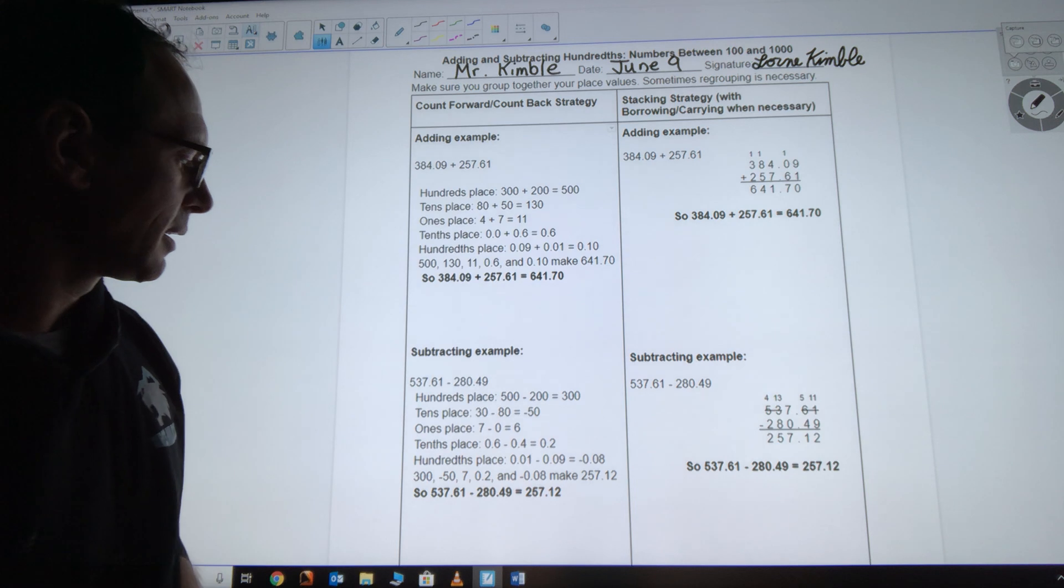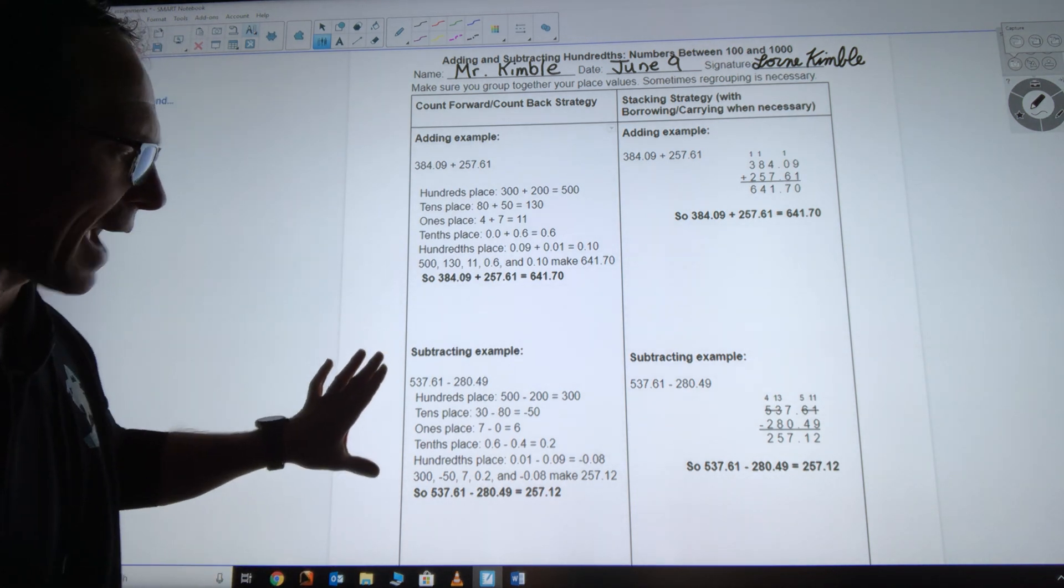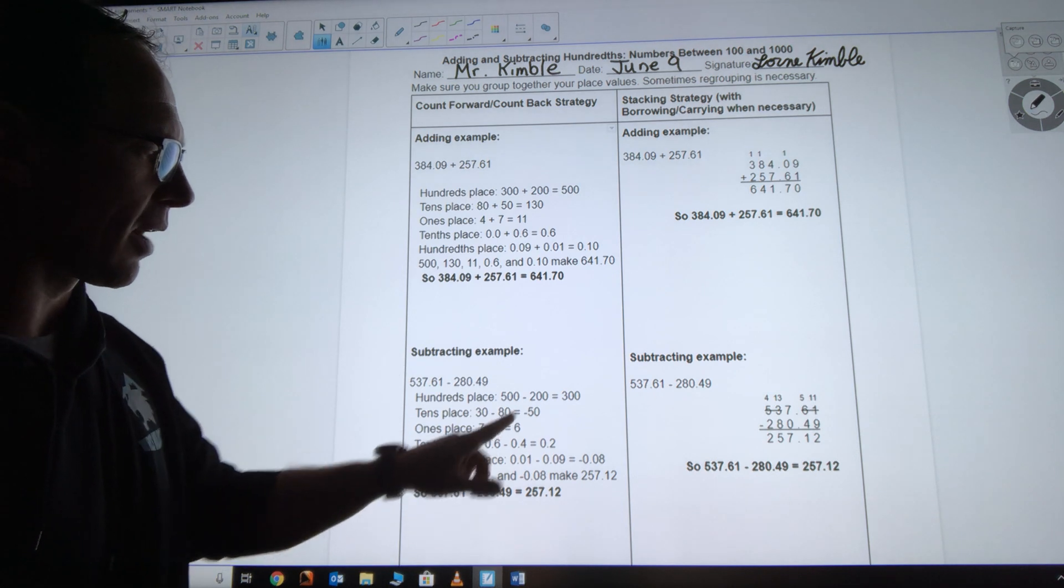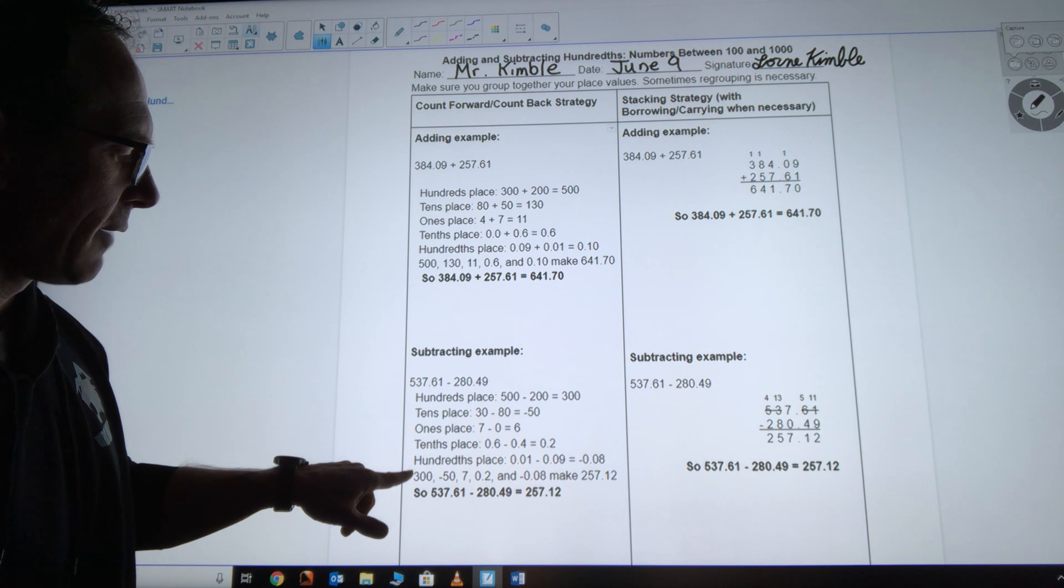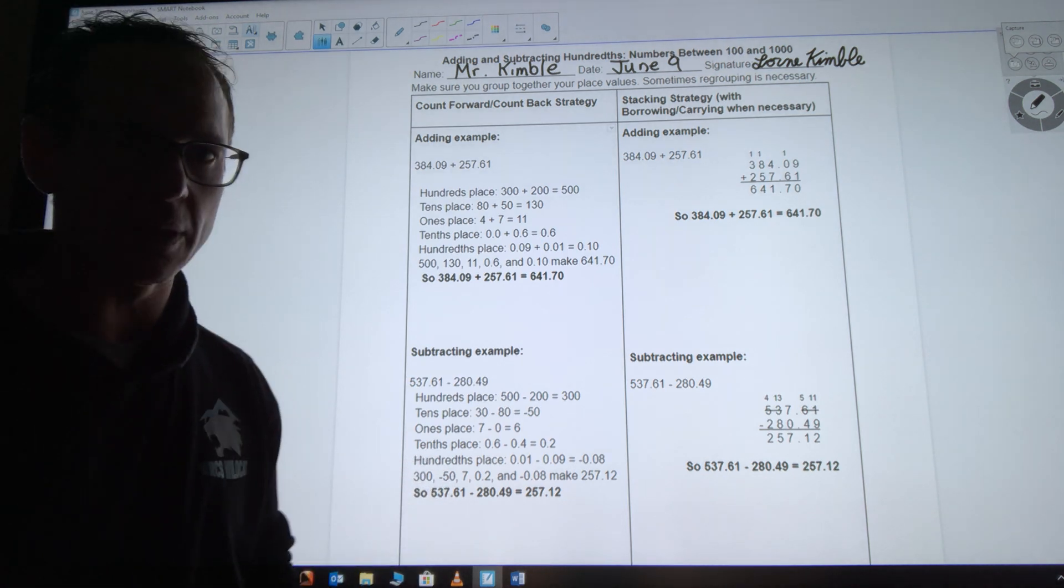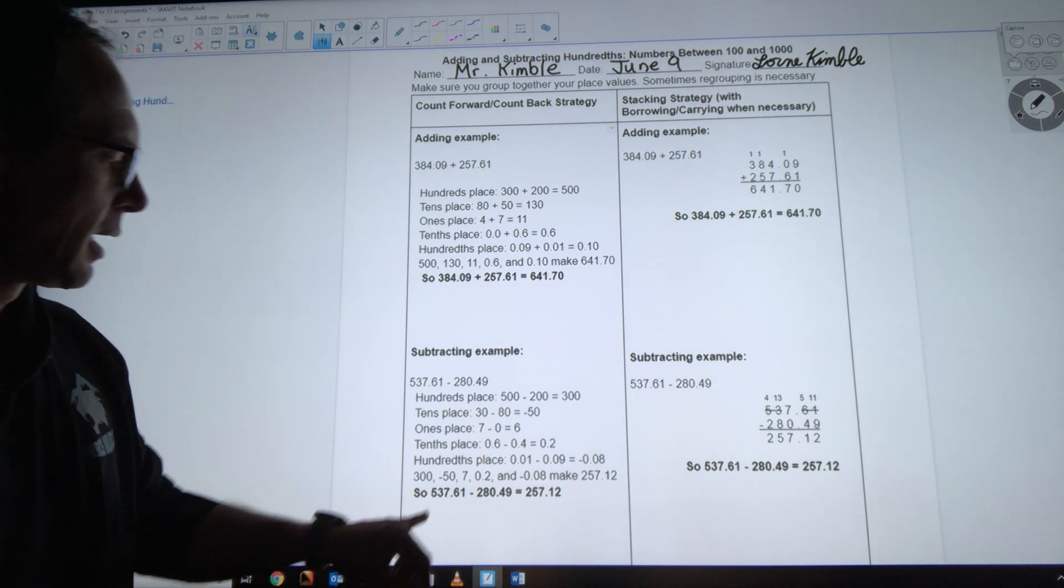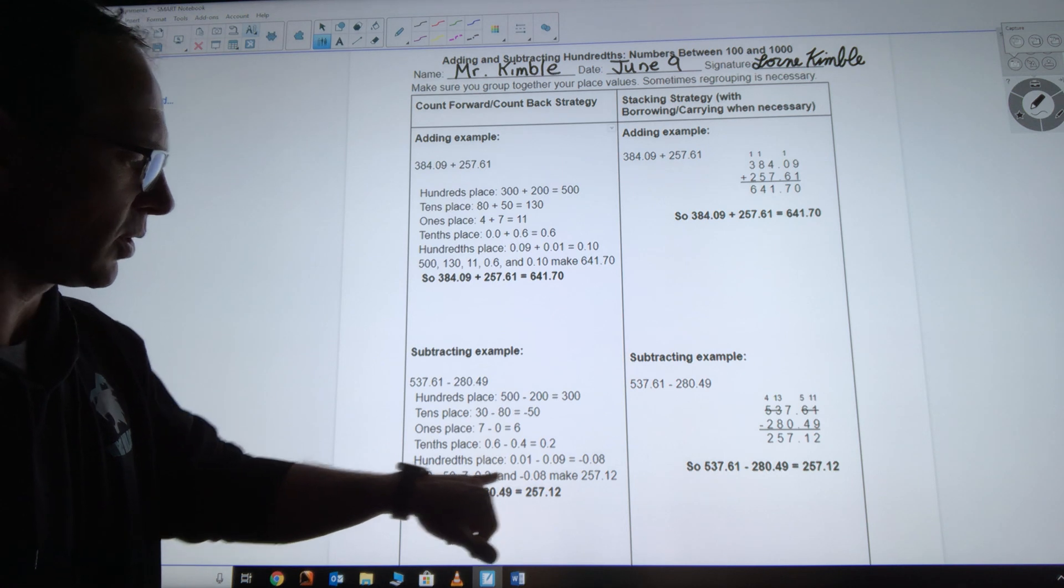When I'm subtracting, I can once again do the, this time it's called the count back strategy. Just have to be really careful if you're dealing with positive numbers or negative numbers, because when I'm done, if I have 300 and negative 50, that's 250, right? 300 minus 50. And then I put 7 on and 0.2 on, that would give me 257 decimal 2.